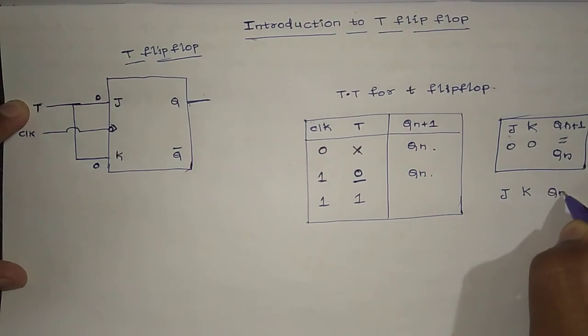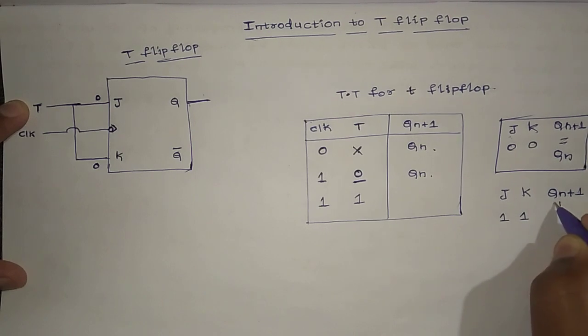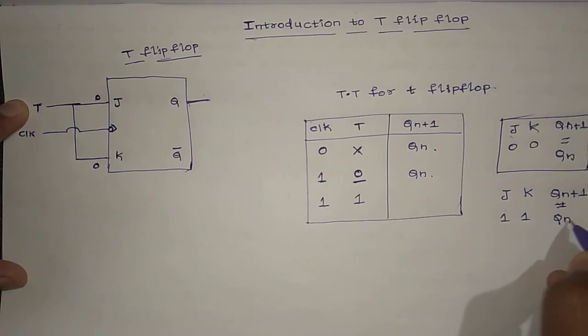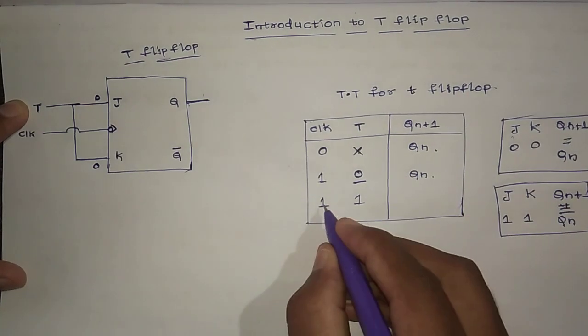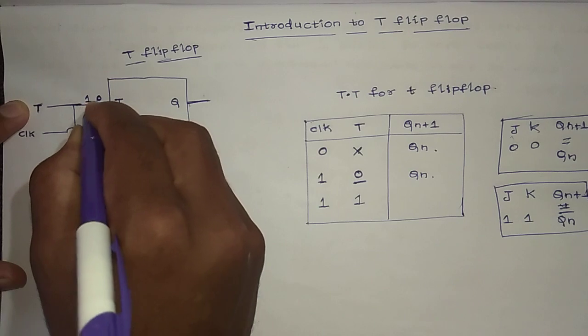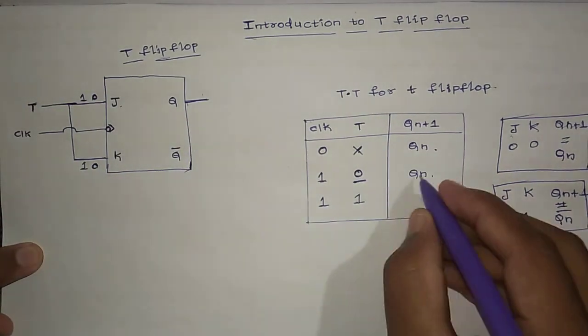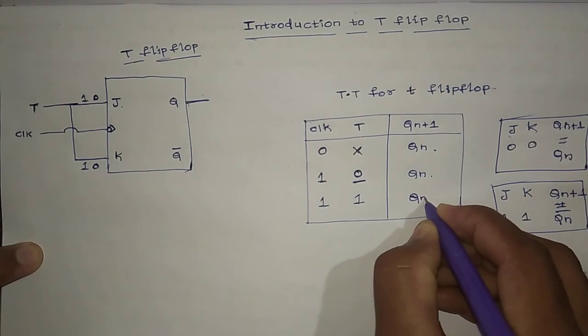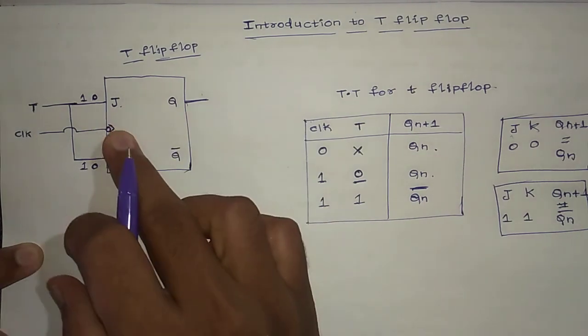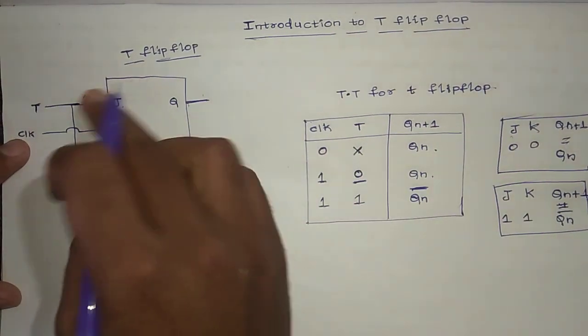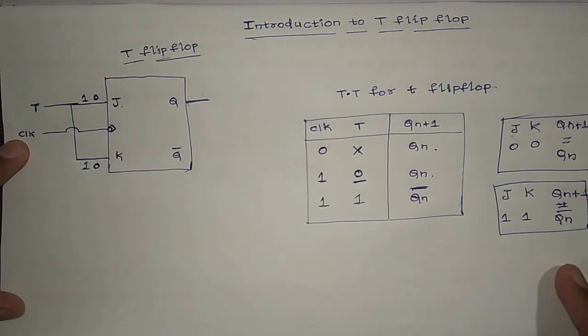When in J-K flip-flop, when J and K are both 1, Qn+1 equals toggling output of Qn bar. This is toggling condition. So when we have T, when we have J-K 0 equals K0, automatically when we have output we have toggling Qn bar. In this way, our J-K flip-flop acts as T flip-flop if we connect both J and K to a single terminal that is T. Hope you understood, thank you.